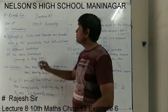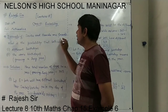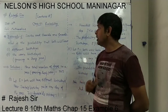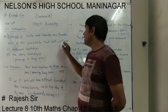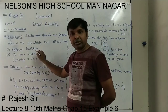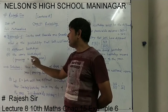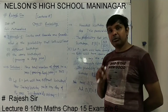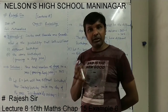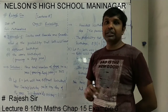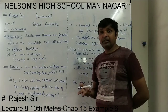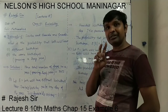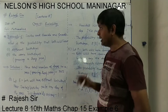Example 6: Savita and Hamita are friends. There are two girls, Savita and Hamita — they are friends. What is the probability that both will have: first, different birthdays, and second, the same birthday? We want to find the probability when they have different birthdays in a year, and also if they have the same birthday on the same day.